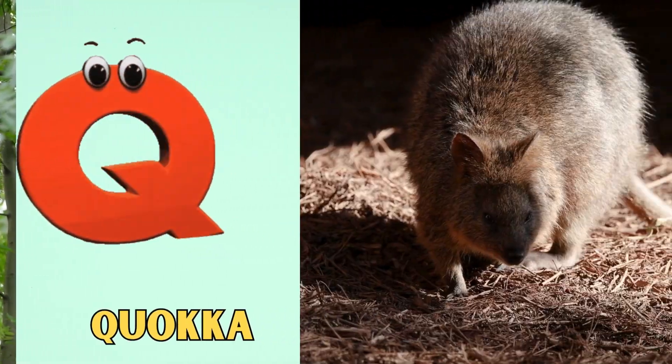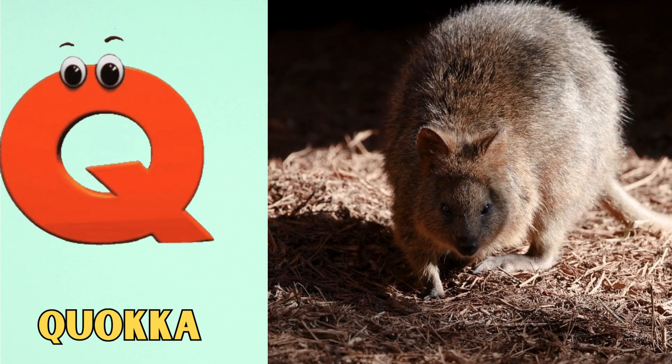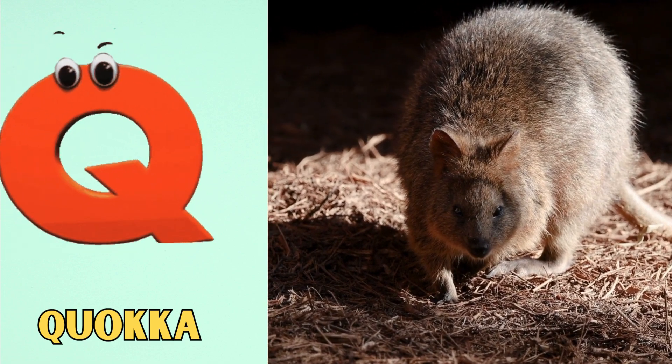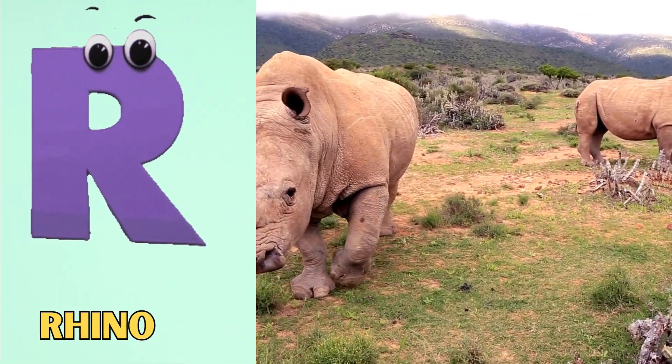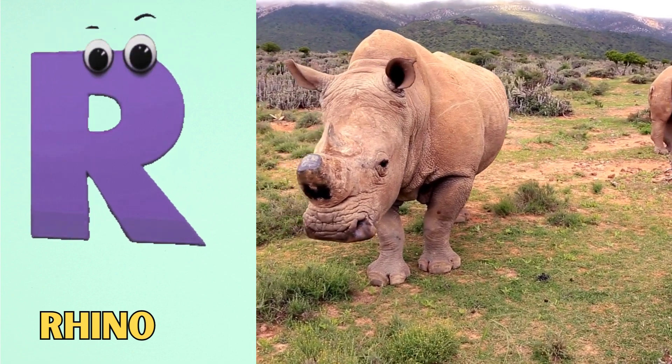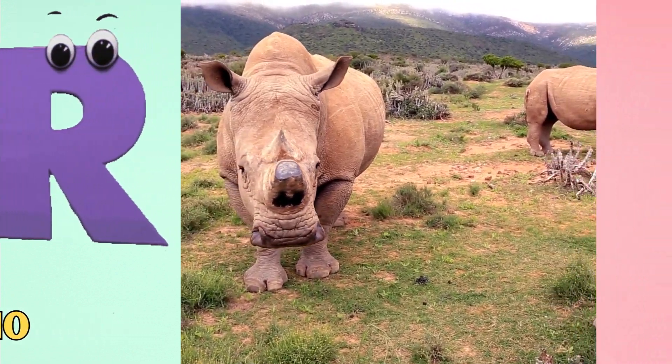Q is for quokka. Kuh, kuh, quokka. R is for rhino. R, r, rhino.